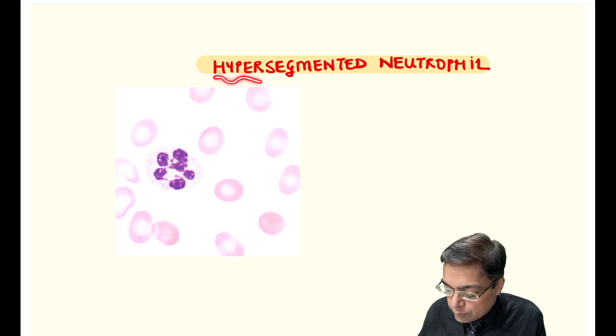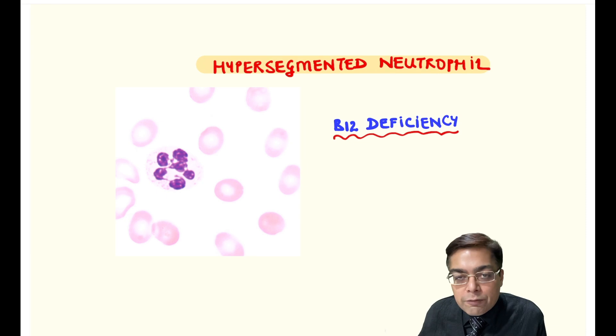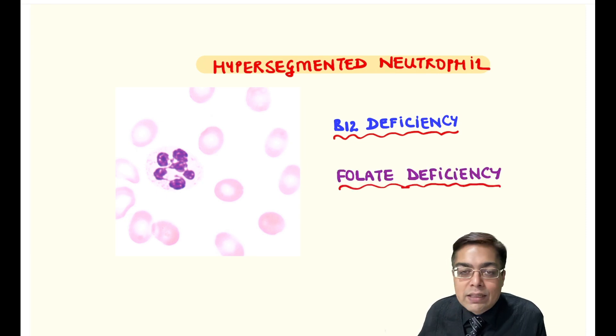Such neutrophils are called hypersegmented neutrophils. Two of the most common reasons for development of hypersegmented neutrophils along with macrocytic RBCs include B12 deficiency and folic acid deficiency.